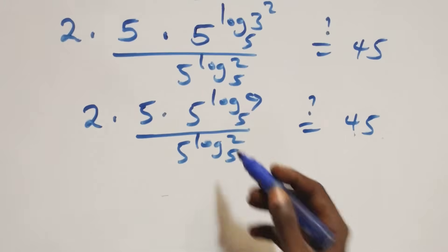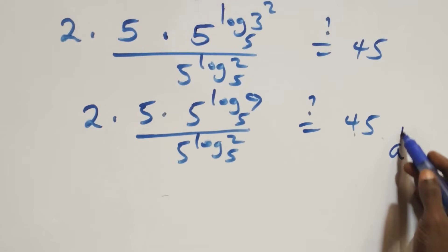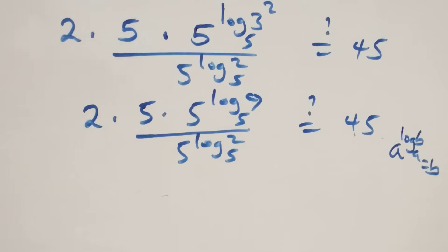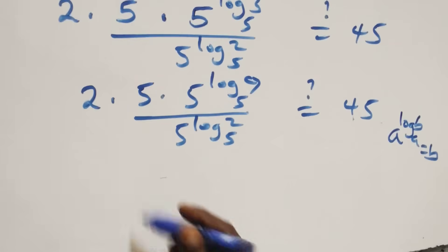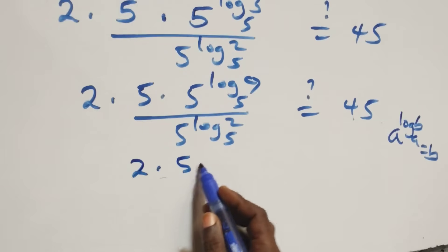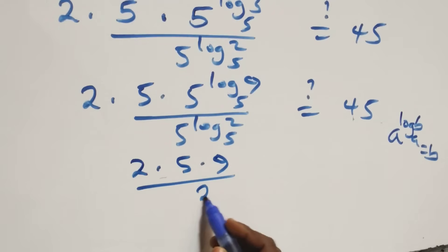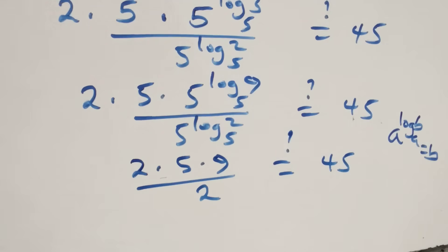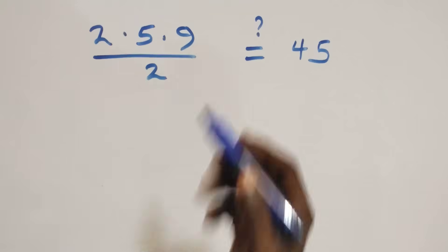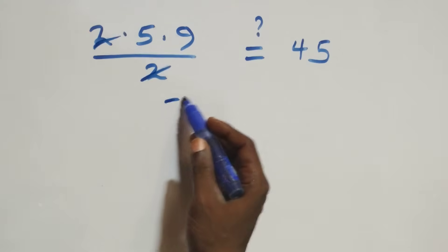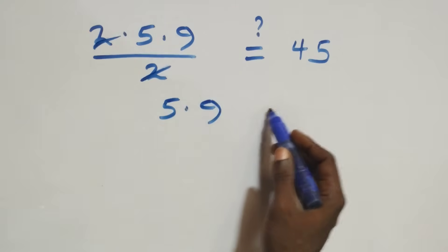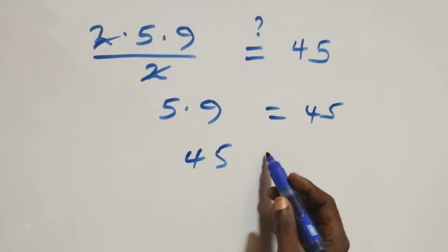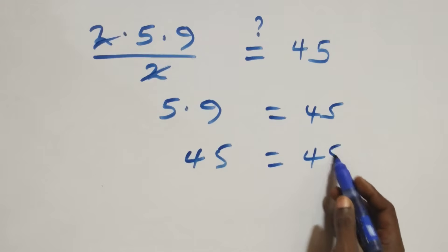This follows from the rule that a raised to power log_a(b) equals b. So this becomes 2 times 5 times 9 over 2, which equals 45. The 2s cancel each other, and we are left with 5 times 9, which equals 45.